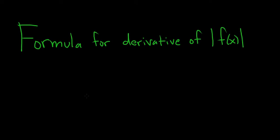In this video I'm going to show you how to come up with a formula for the derivative of the absolute value of any function, as long as you can take the derivative of the function. And then we're going to use the formula to find the derivative, and then we'll do it without the formula as well. So let's start by finding the derivative of the absolute value of f of x — let's call it g of x.